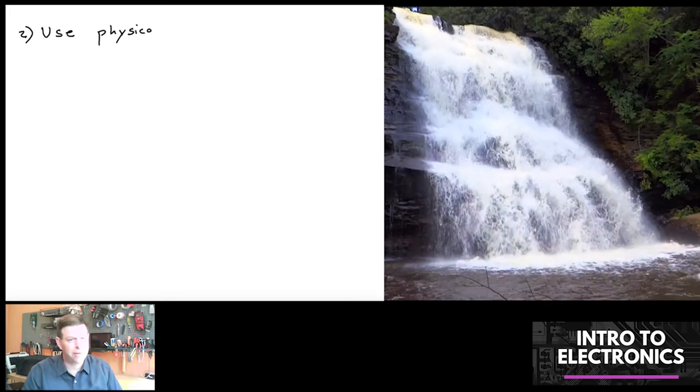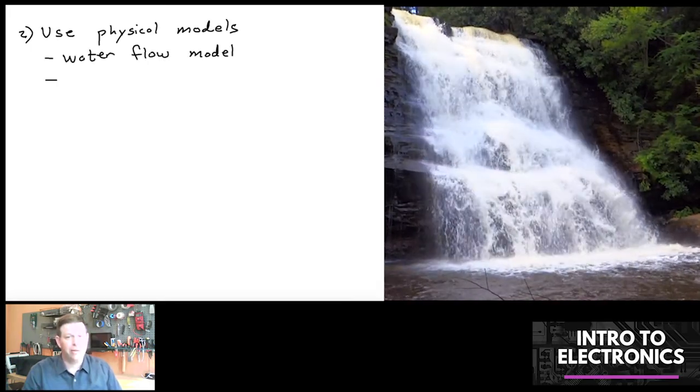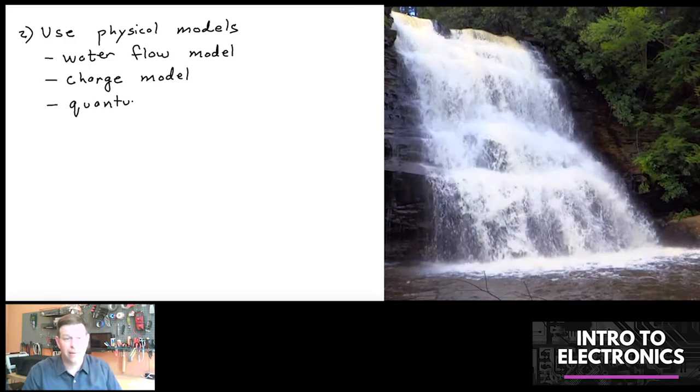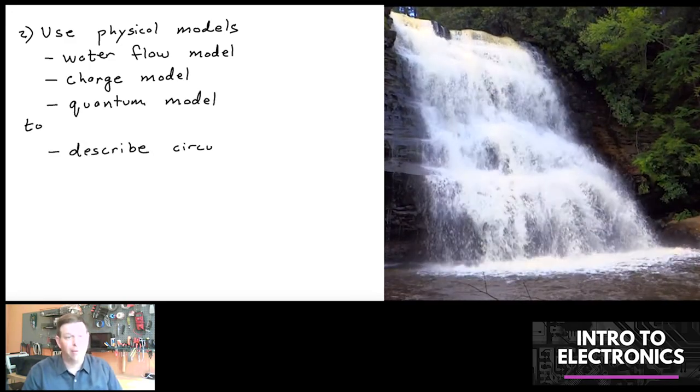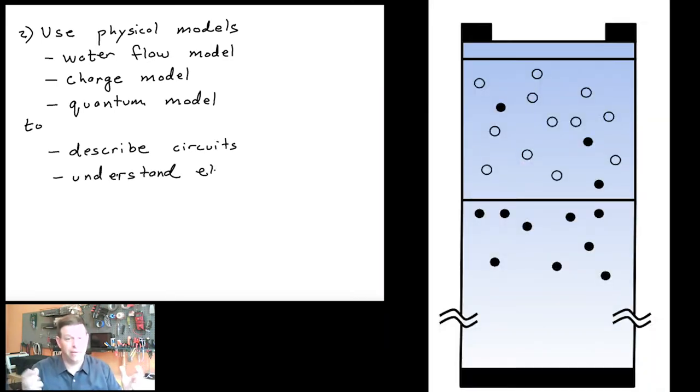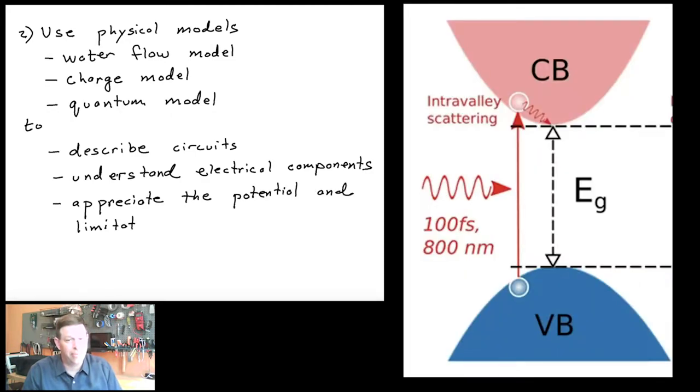The second is two physical models for describing electrons. These will include the water flow model of electrical flow in circuits, the charge model of separated positive and negative charges, and the quantum mechanical model. And these help you describe circuits, understand the components, and also appreciate the limits and opportunities in the field of electronics.